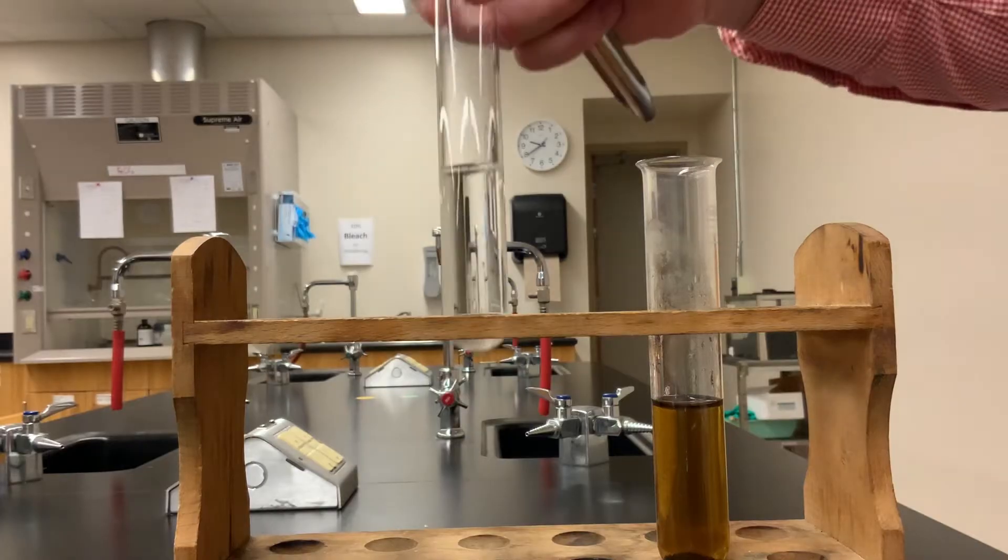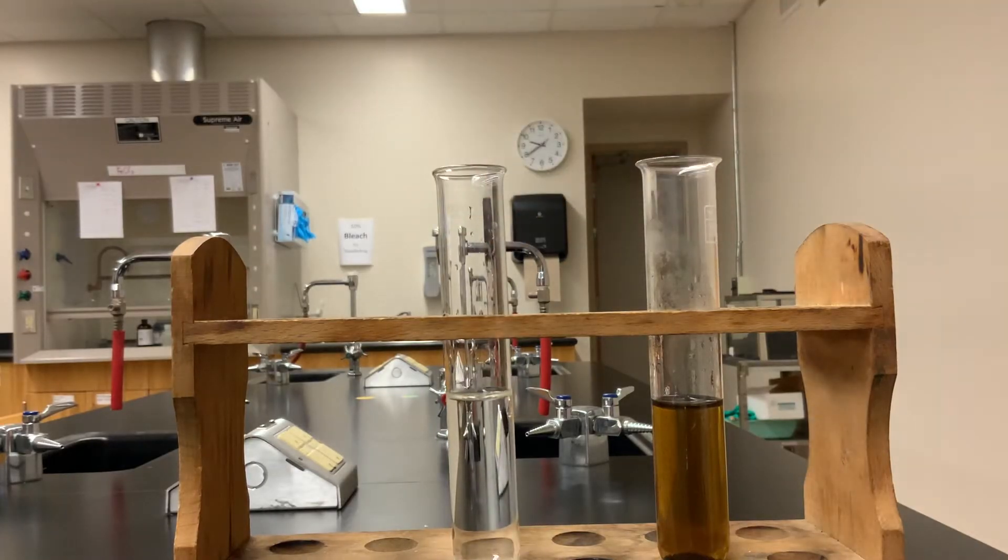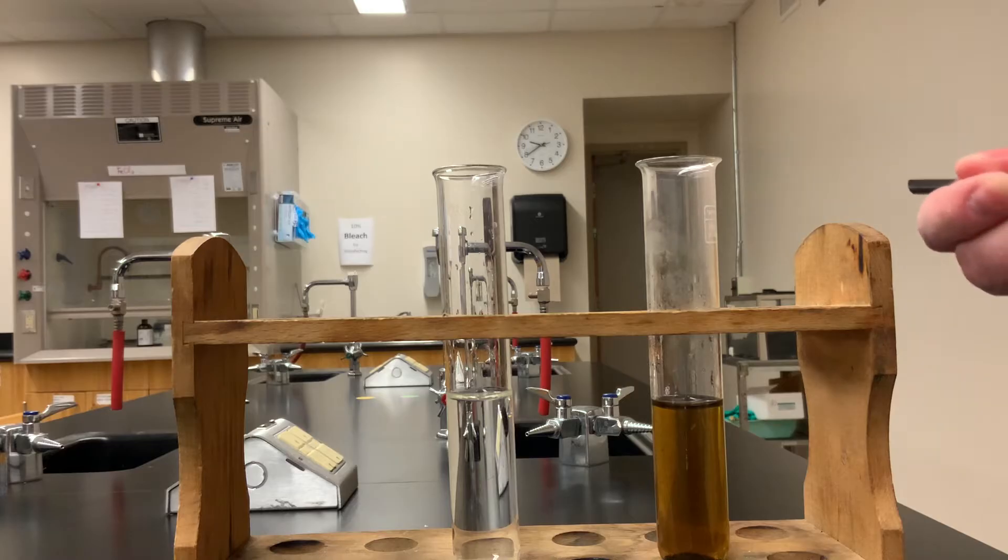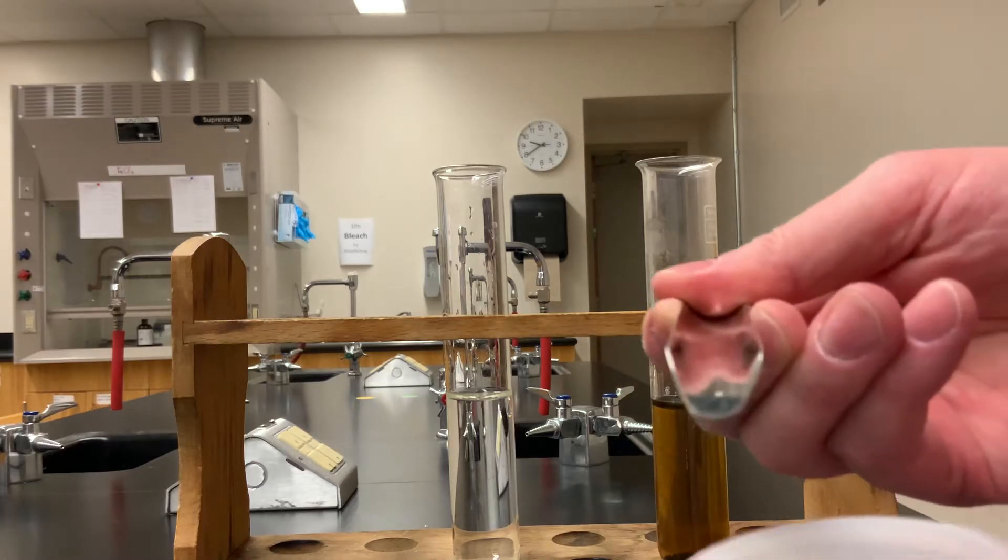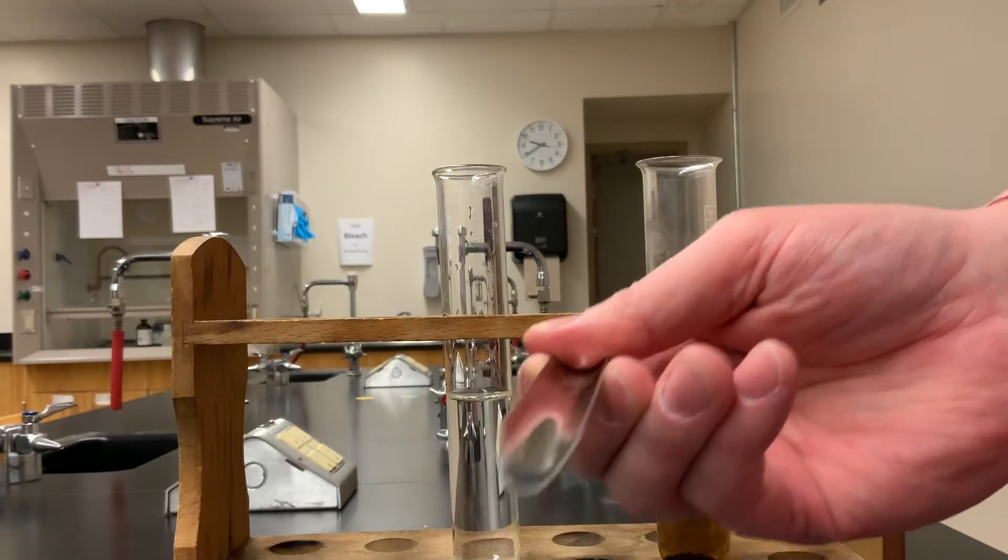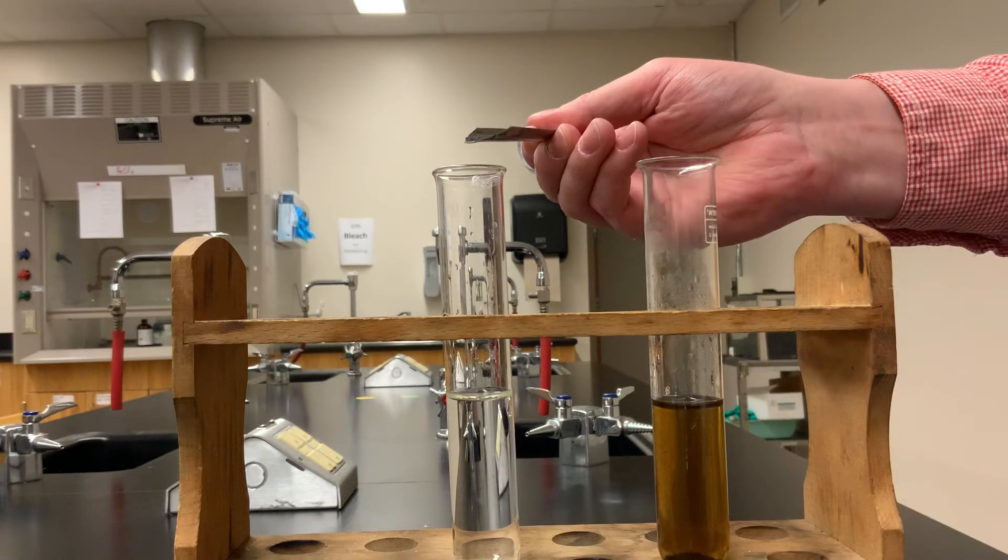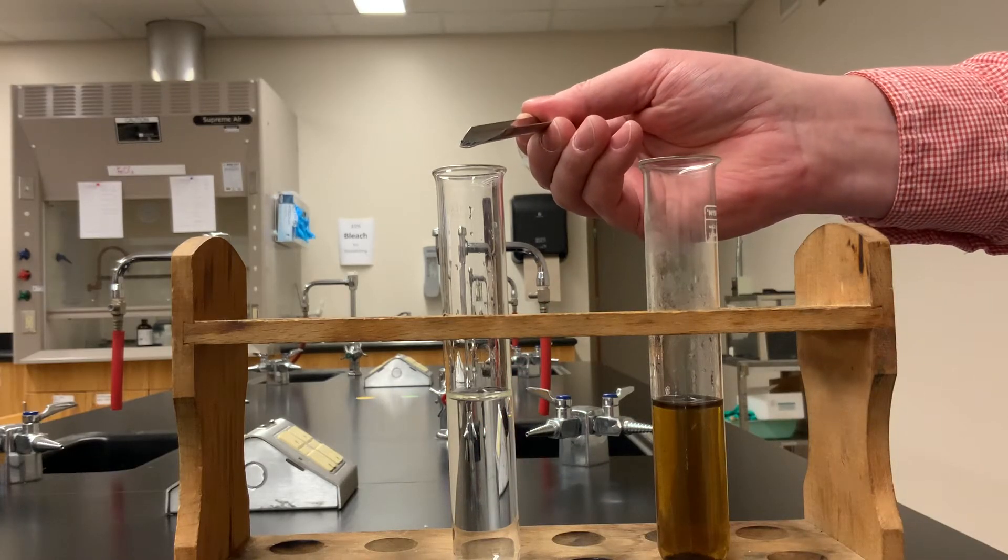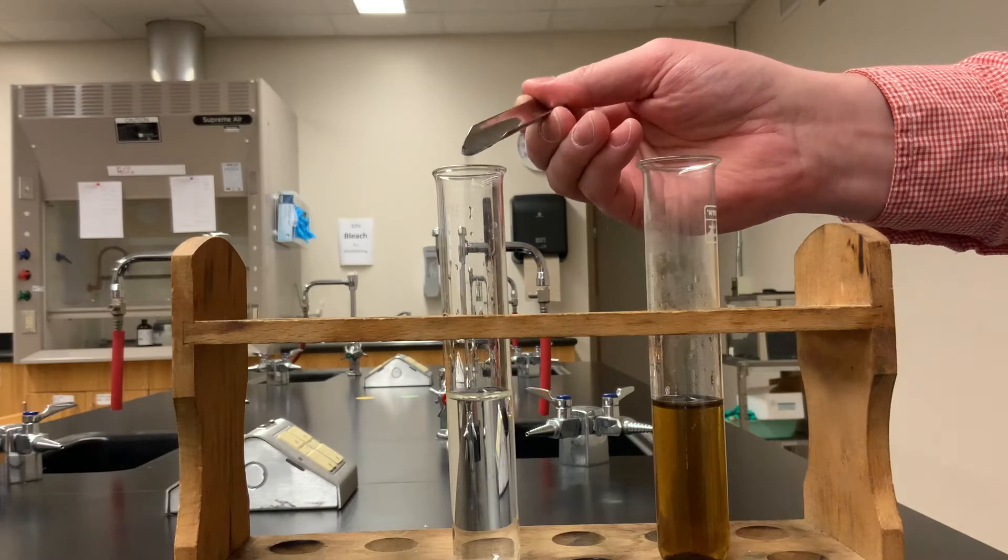So we have a test tube here with 6% hydrogen peroxide, and I'm going to add a small pinch of the potassium permanganate. Just a small pinch on the end of a scoop, add that to the hydrogen peroxide in the test tube.